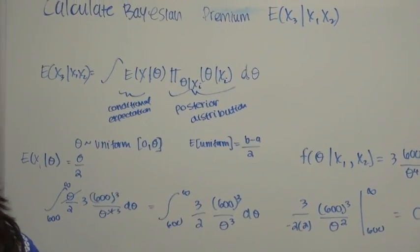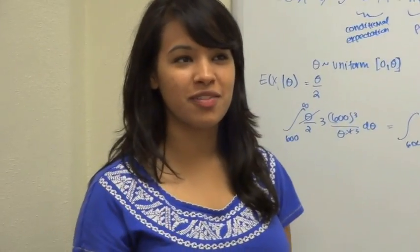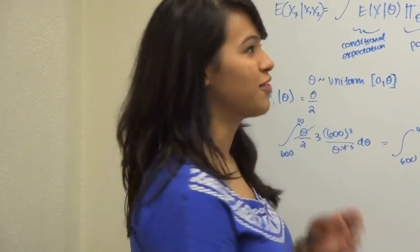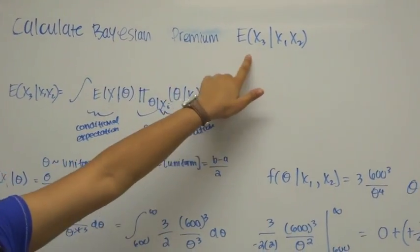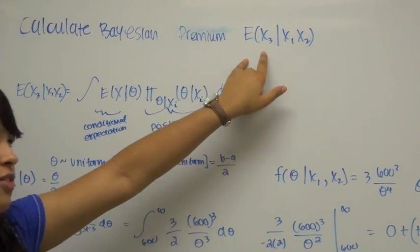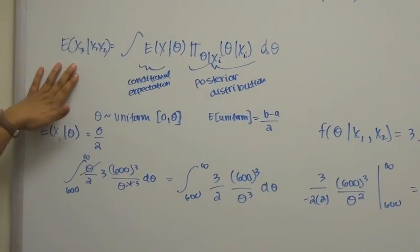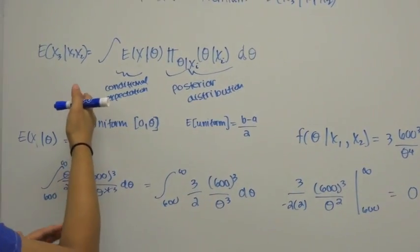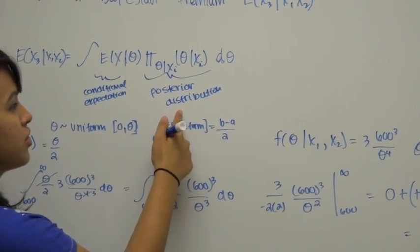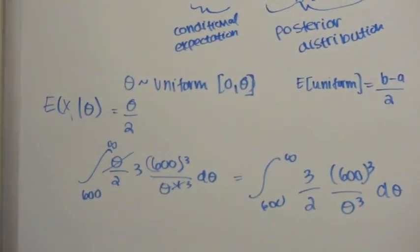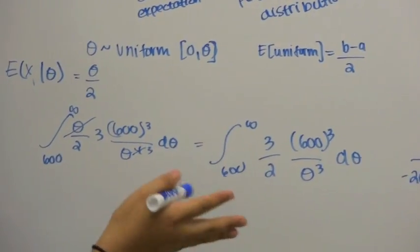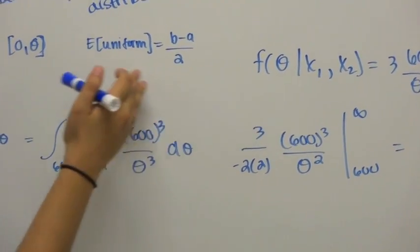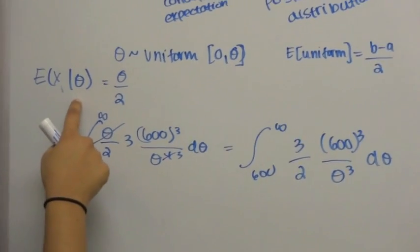On exams, you're often given more information than you need, so don't be concerned if you're not using all of it. To calculate the Bayesian premium of the third claim — E[X₃ | X₁, X₂] — we use the integral of the conditional expectation times the posterior distribution. Since claims are uniformly distributed between 0 and θ, and the expected value of a uniform variable is (b-a)/2, the conditional expectation for this interval is θ/2.